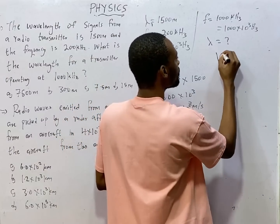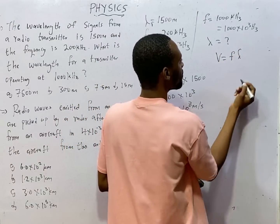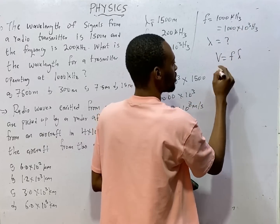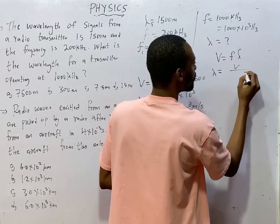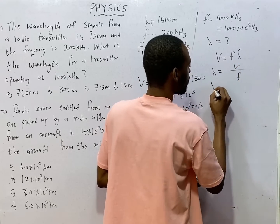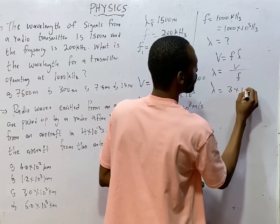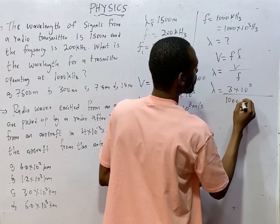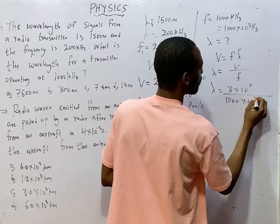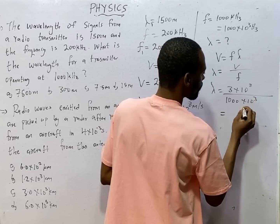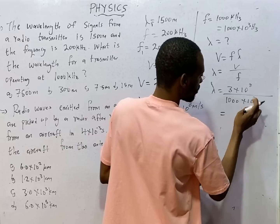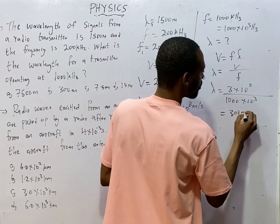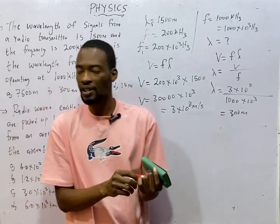The formula remains V = Fλ. We have V and F, and we are looking for wavelength. So lambda = V / F = 3 × 10⁸ divided by 1000 × 10³. The exponent: 8 minus 3 is 5, giving us 3 × 10⁵ / 10³... working through the indices, this gives you 300 meters. So the wavelength is 300 meters, which should give you option B.